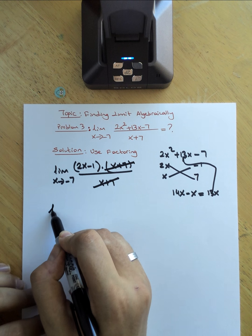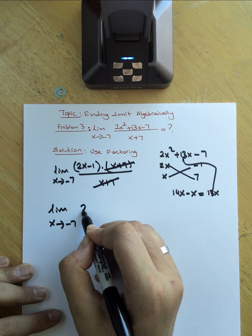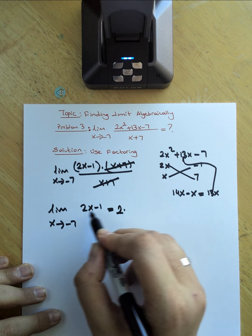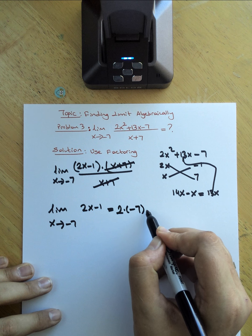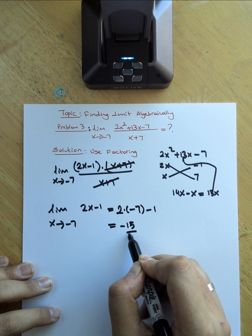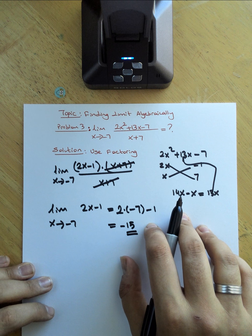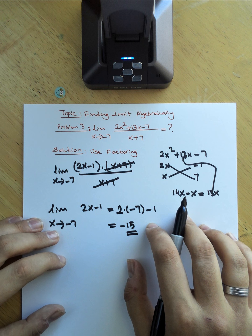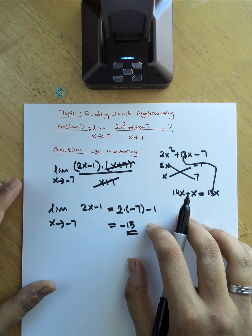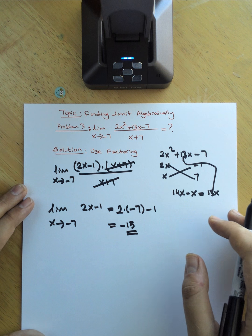After simplification, my limit turns into the polynomial expression 2x minus 1. Now I can do direct substitution. Substituting negative 7 for x: 2 times negative 7 minus 1 gives negative 15. So the answer for this limit is negative 15. Thank you for watching. Today we've solved three problems about finding the limit algebraically, and there will be more videos about solving limits algebraically.